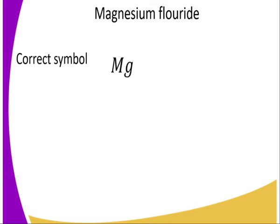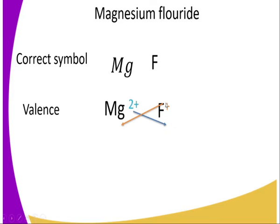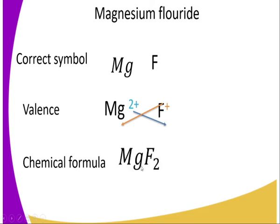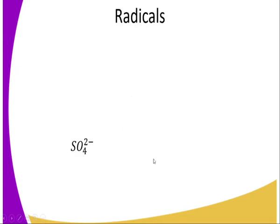Number two: magnesium fluoride. The correct symbol for magnesium is Mg. Fluoride means fluorine, which is an atom with atomic number 9 and electronic configuration 2,7. Now, the valency of these elements: magnesium has oxidation state +2 and fluorine has oxidation state -1, as indicated. So we cross-multiply the oxidation states — one magnesium ion requires two fluoride ions. From this illustration, you can see that magnesium has a valency of two while fluoride has a valency of one. When we cross-multiply the valencies, we get one magnesium atom bonded to two fluoride atoms, giving us the chemical formula MgF₂.